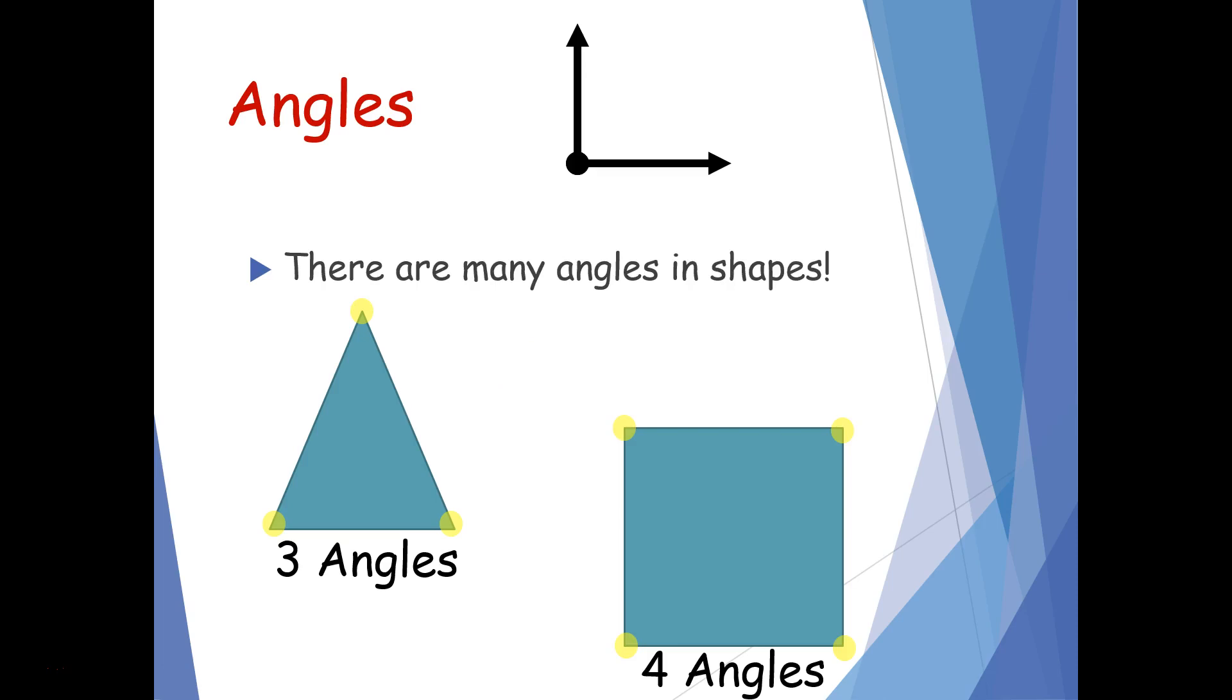There are many angles in shapes. We have a triangle here and I see that this line and this line meet and connect at this vertex. That shows an angle. Triangles have three angles. And squares have four angles. The corners on the squares where the two lines meet is an angle.